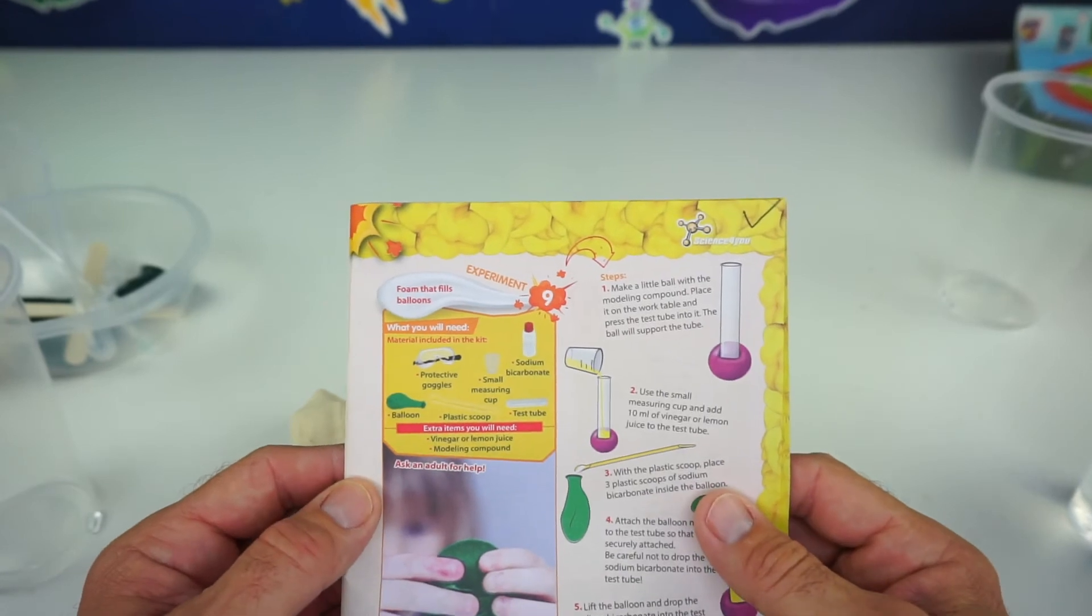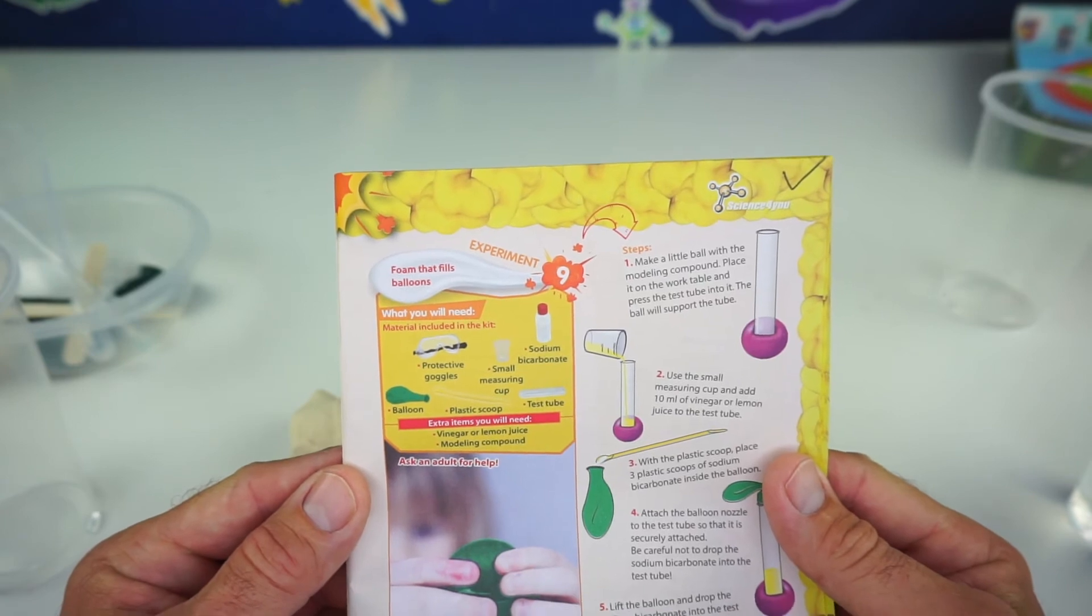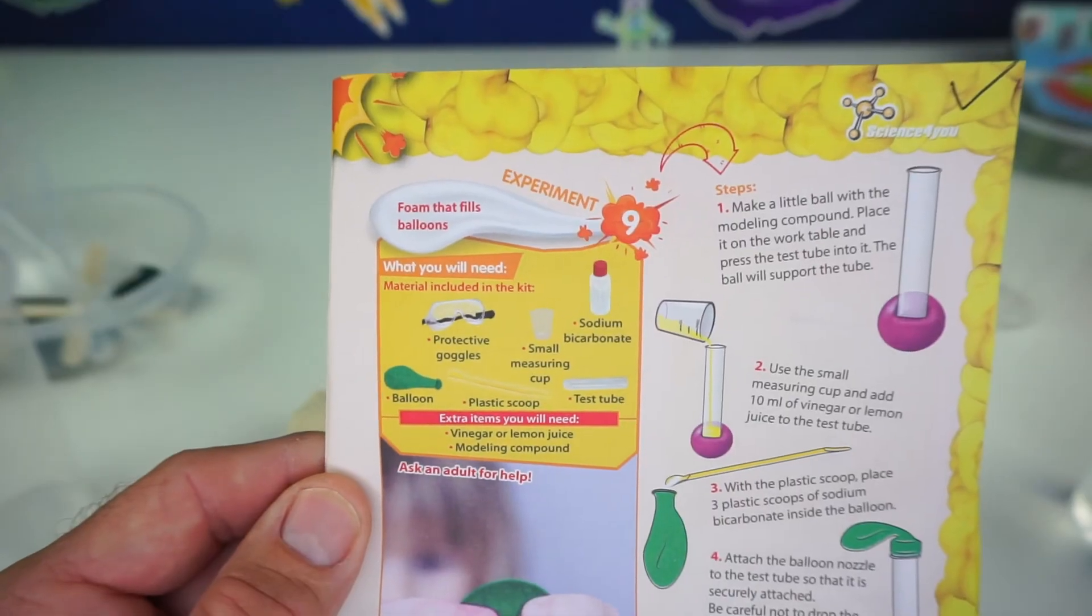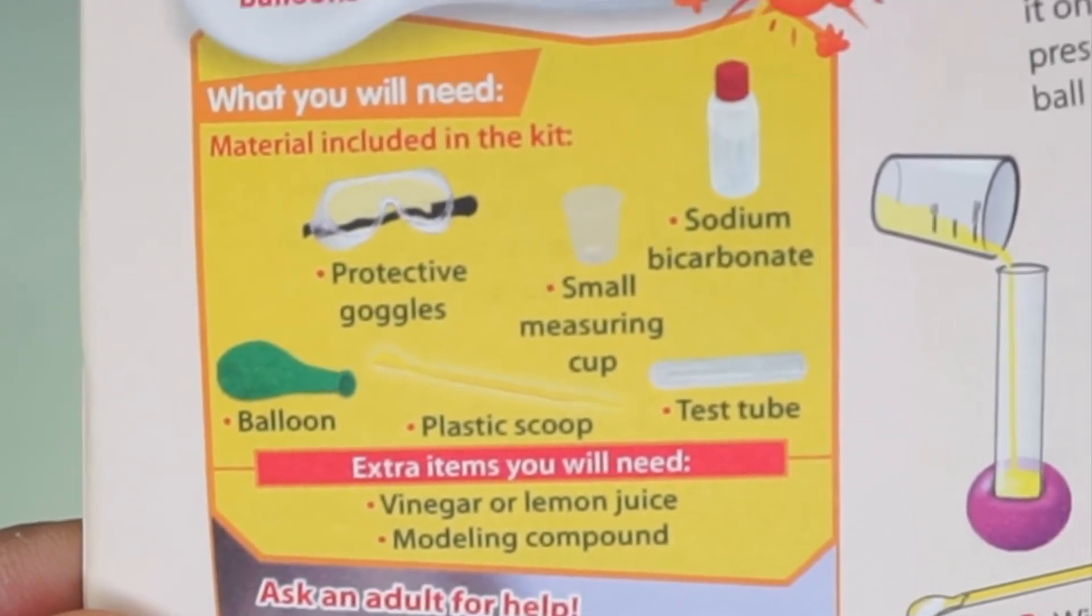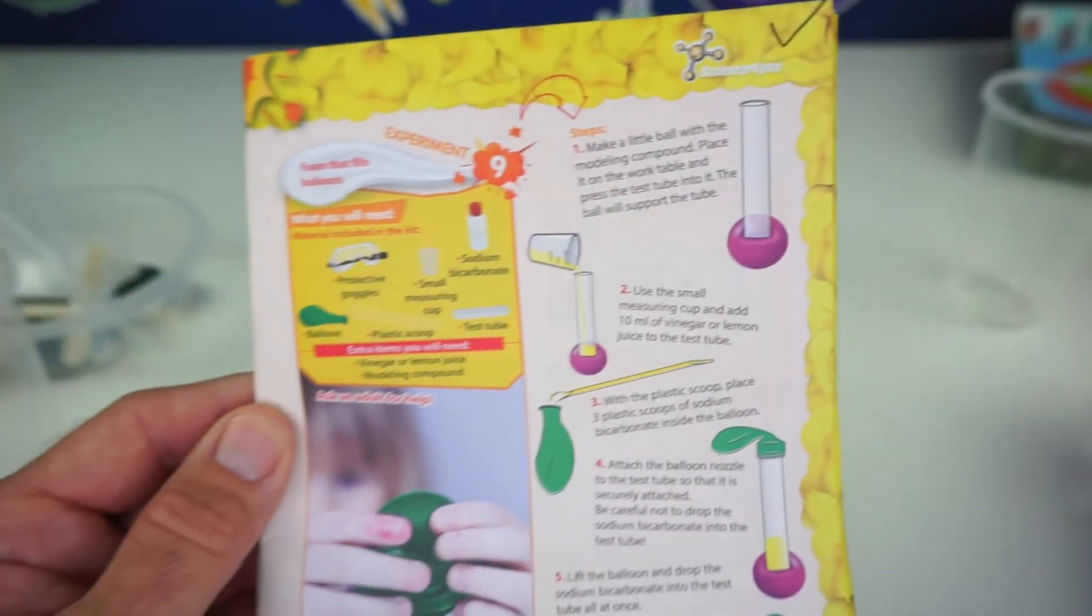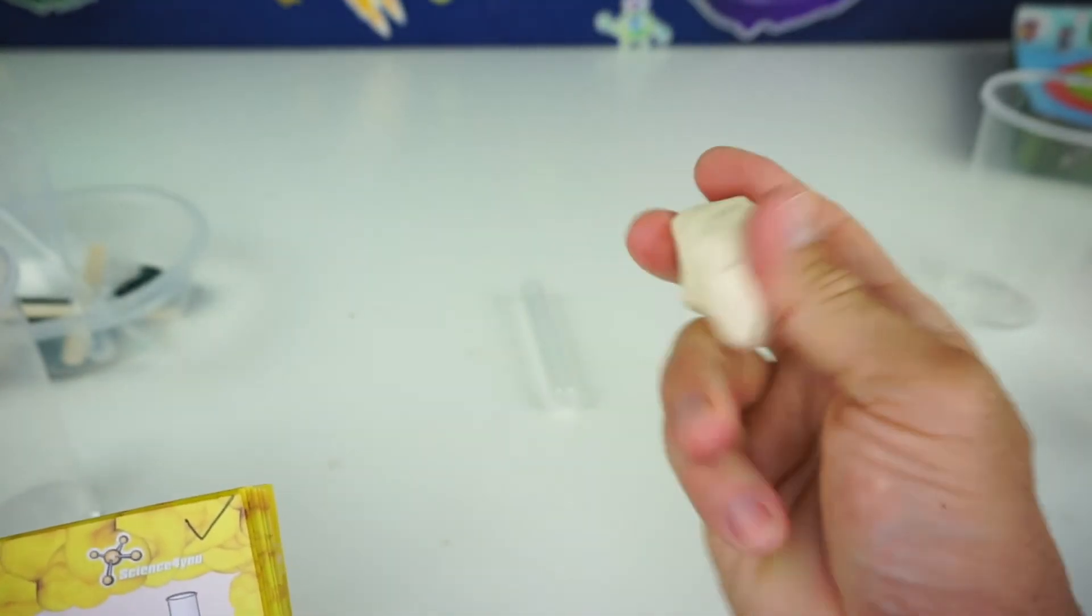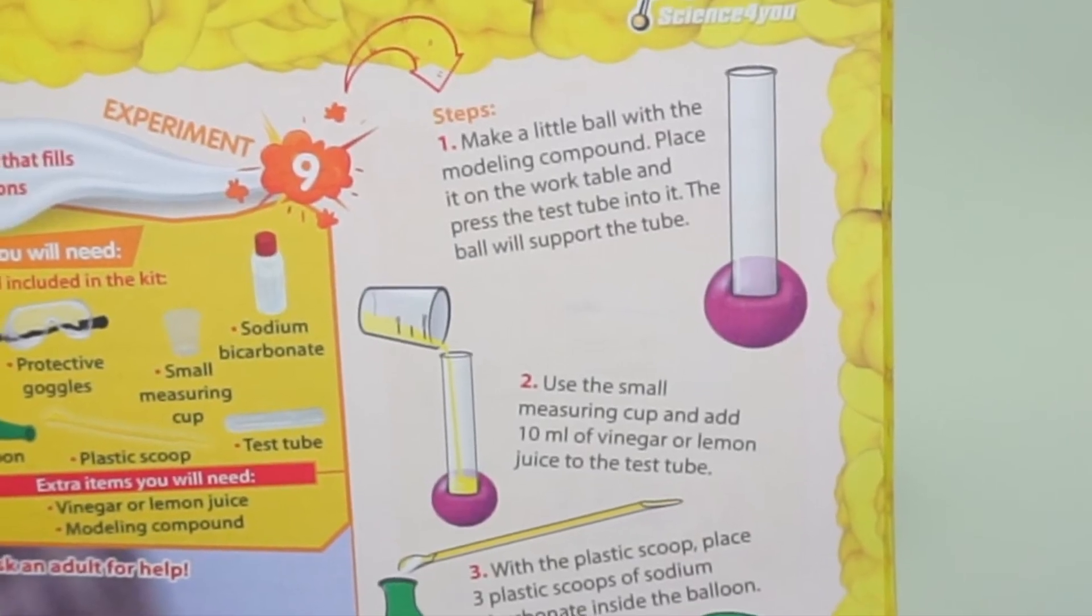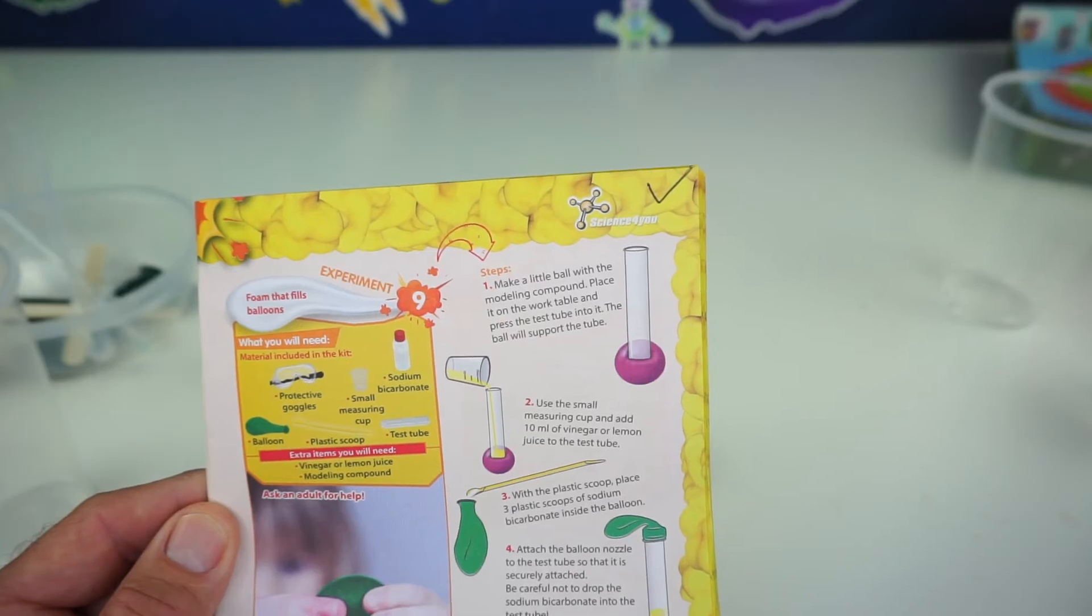Alright kids, now that we had one successful experiment, let's try one more and this one is called Foam That Fills Balloons. Whoa. And here are the materials that we will be needing today. And some extra items will be vinegar or lemon juice. So I have some regular household white vinegar and some modeling compound. I have Play-Doh that will work just fine.